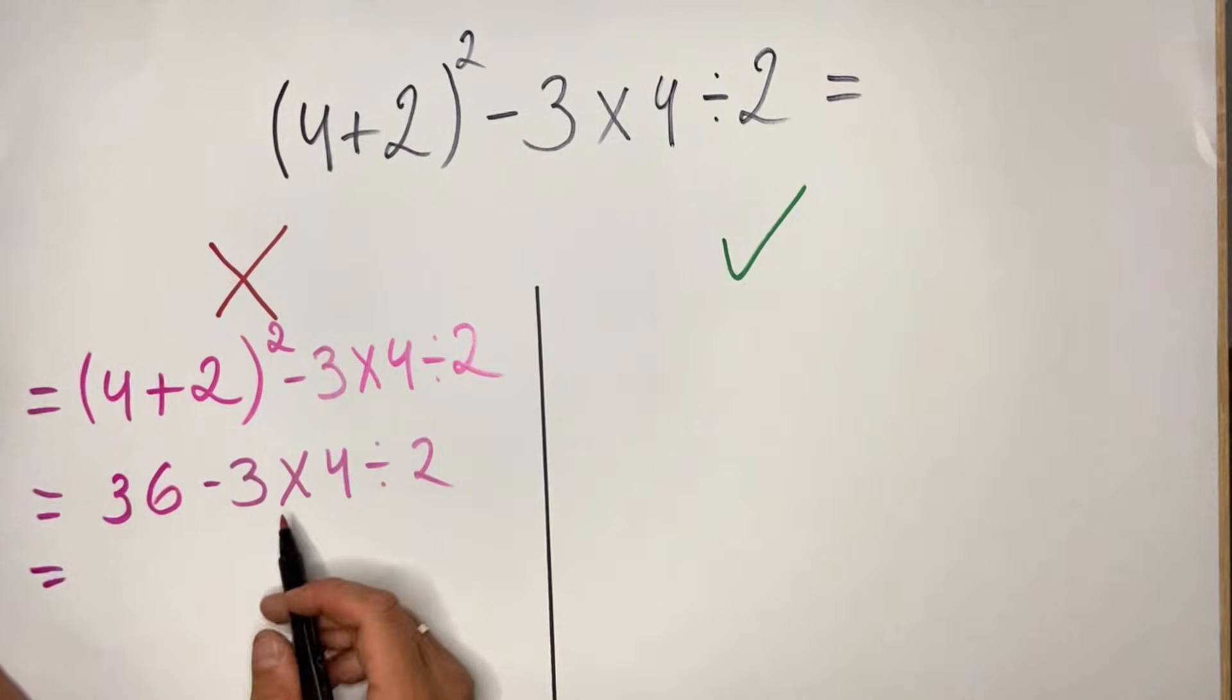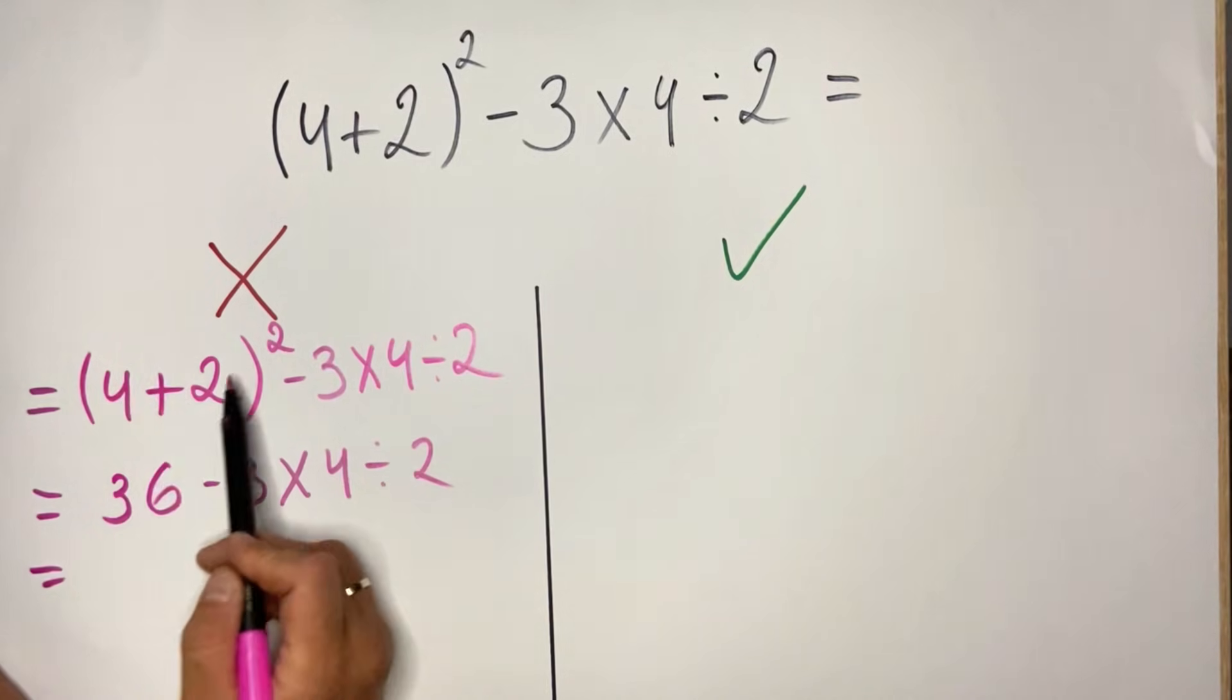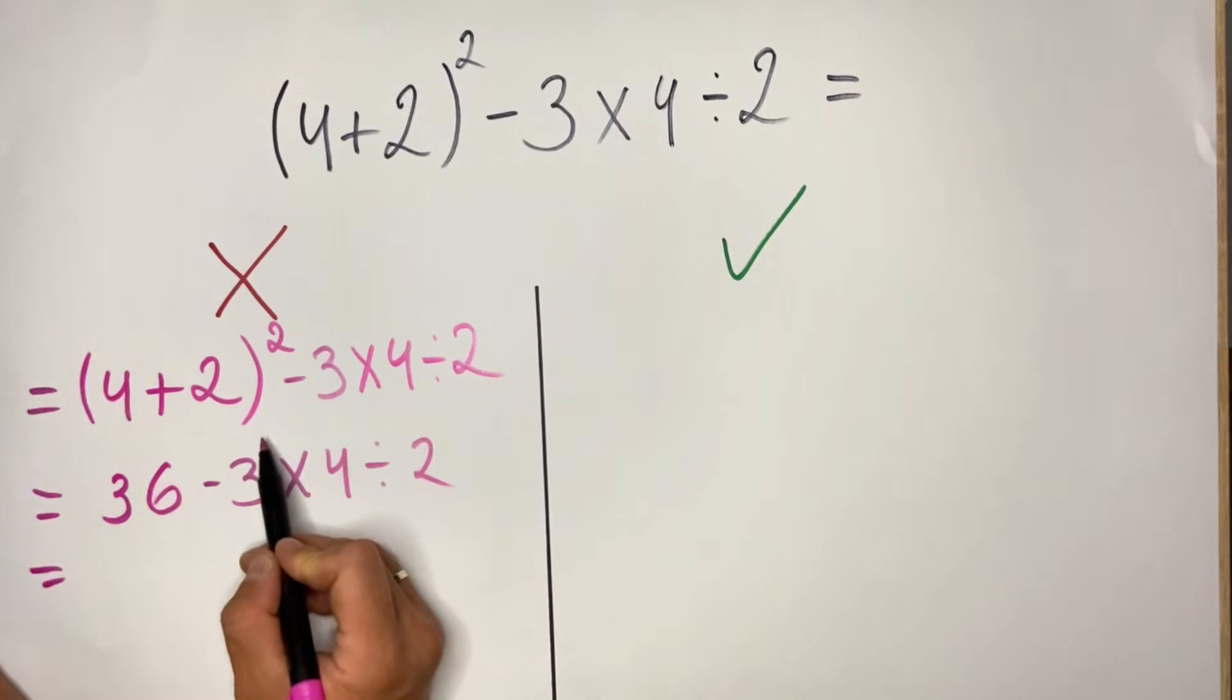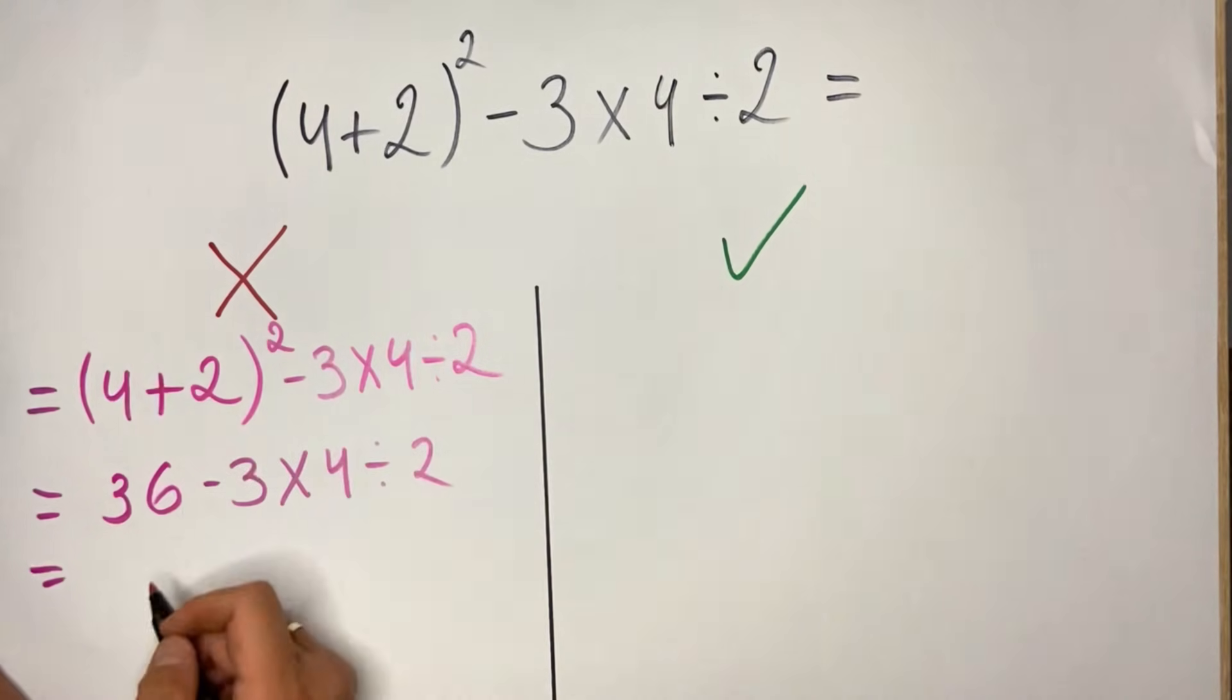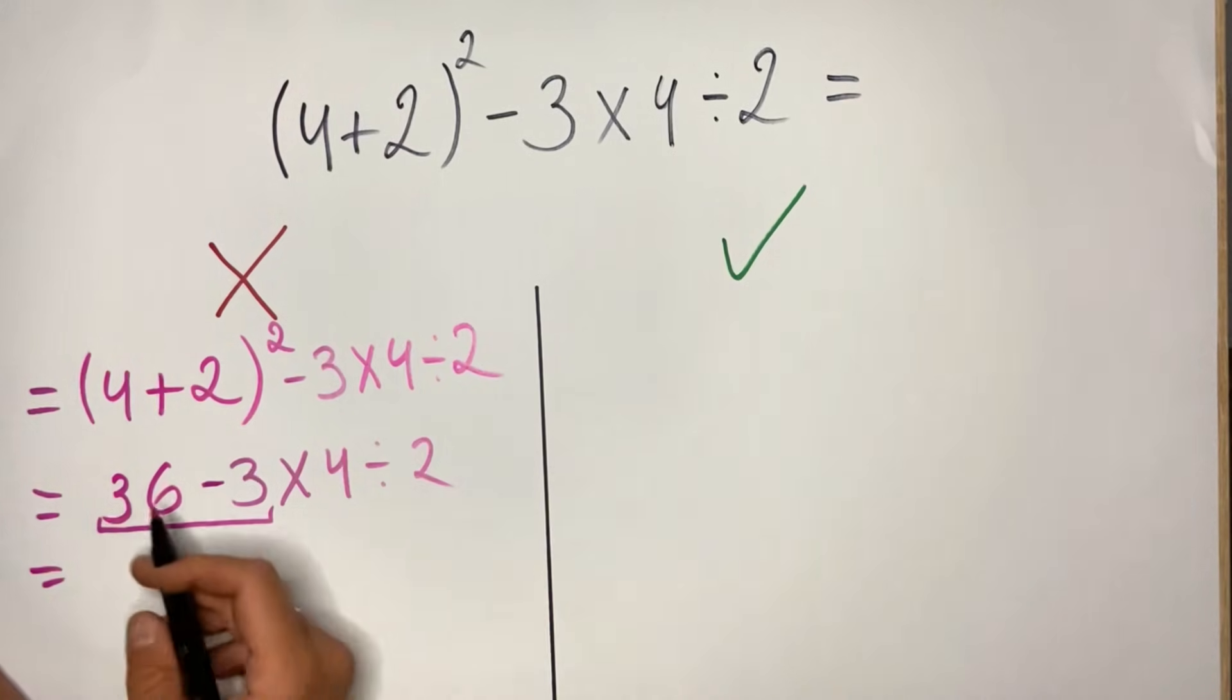After calculating the parentheses and the square, they should start with multiplication and division from left to right. In this case, most people disregard this and they start from left to right with the subtraction and so on.